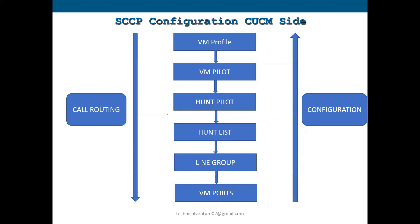Let's discuss the SCCP configuration on the CUCM side. You can see it on the screen — we have voicemail profile, voicemail pilot, hunt pilot, hunt list, line group, and voicemail ports. The down arrow represents the call routing flow: how a call is routed when it gets transferred from the phone to the voicemail. The call will hit the voicemail profile first.